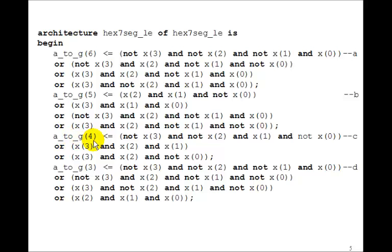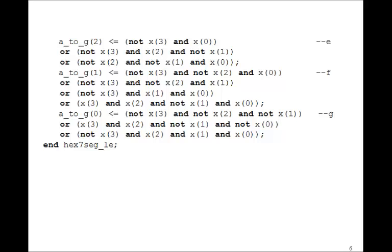Here's a_to_g sub 2, which is the e that we did: not x3 and x0 or not x3 and x2 and not x1 or not x2 and not x1 and x0. And then f would be a_to_g sub 1 and g would be a_to_g sub 0.